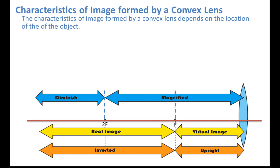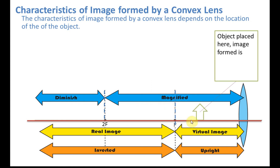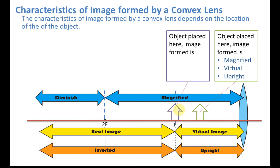If the object is placed further than F — from there to infinity — the image formed is real and inverted. So to summarize size: at 2F, same size; less than 2F, bigger; more than 2F, smaller. For real or virtual: less than F gives virtual and upright; more than F gives real and inverted. Let's apply this — if the object is placed here between O and F, the image is magnified, virtual, and upright.